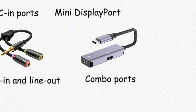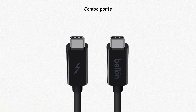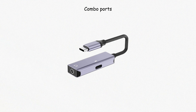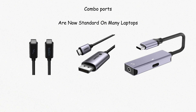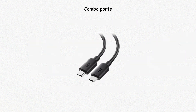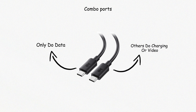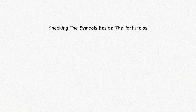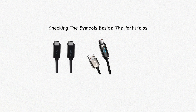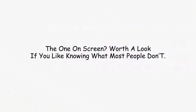Combo ports like USB-C — with DisplayPort, Thunderbolt, charging, and audio in one connector — are now standard on many laptops. They reduce the number of physical ports but require understanding compatibility. Not all USB-C ports are created equal: some only do data, others do charging or video, and only a few do everything. Checking the symbols beside the port helps — a lightning bolt for Thunderbolt, a battery for charging, or a D for DisplayPort. The one on screen? Worth a look if you like knowing what most people don't.